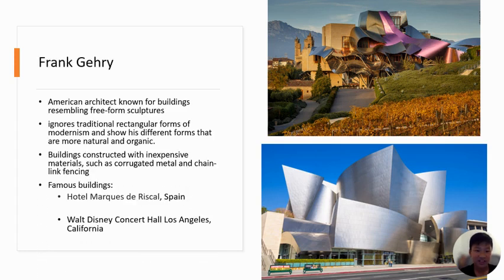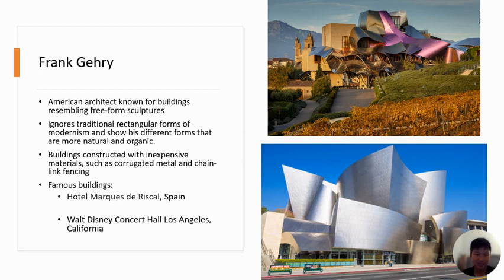Frank Gehry is an American architect known for buildings resembling freeform sculptures. He ignores traditional rectangular forms of modernism and shows different forms that are more natural and organic. His buildings are constructed with inexpensive materials such as corrugated metal and chain-link fencing.